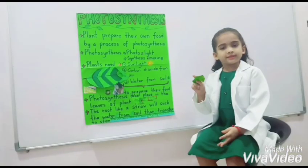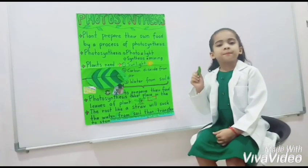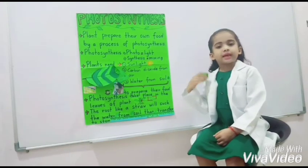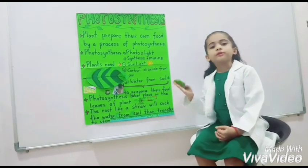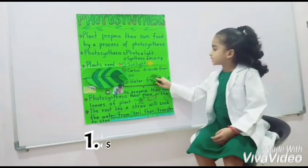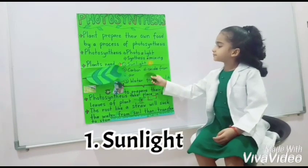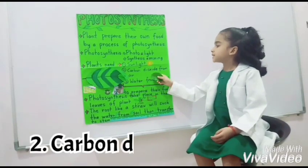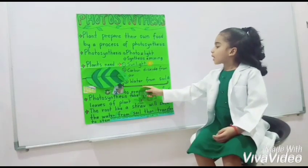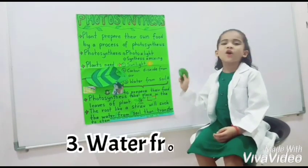What are the things that the plants need to make their own food? Sunlight, carbon dioxide from air, and water from soil.